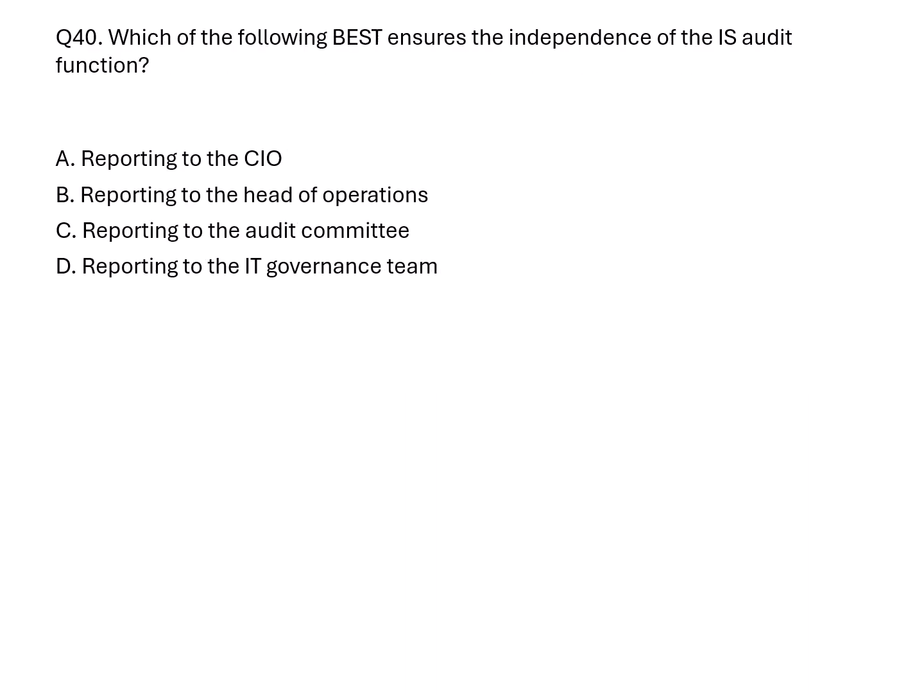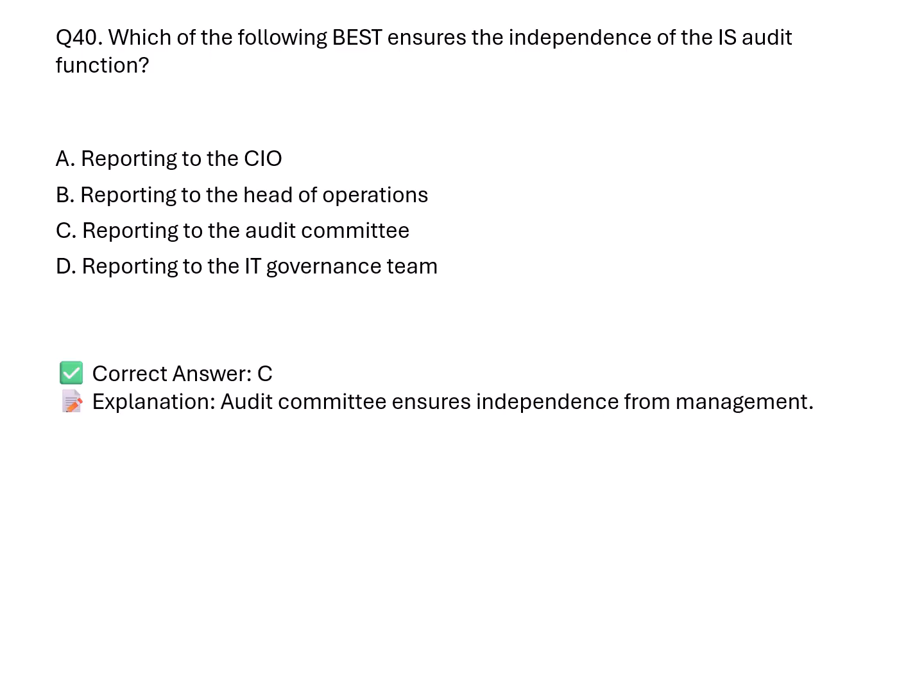Question 40. What best ensures the independence of the IS audit function? A. Reporting to the CIO. B. Reporting to the head of operations. C. Reporting to the audit committee. D. Reporting to the IT governance team. Correct answer: C. Explanation: Reporting to the audit committee provides independence from management influence, which is essential for objective auditing.